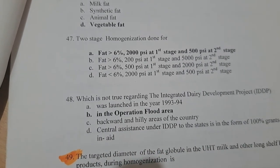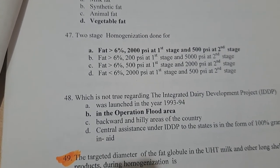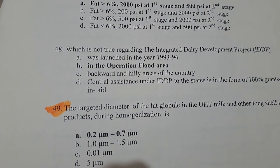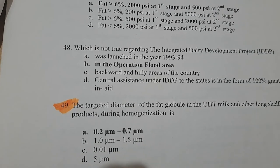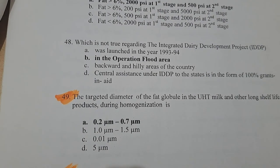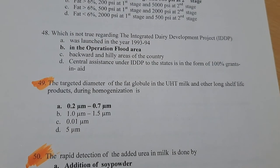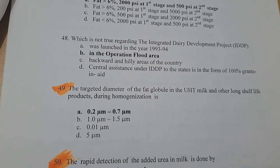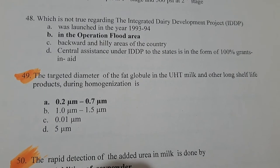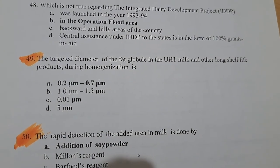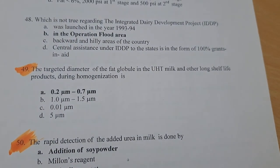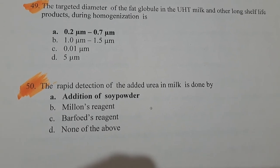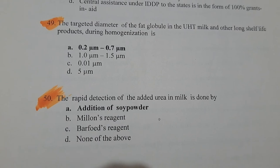In the field of milk, the source of fat is vegetable fat. Two-stage homogenization is done when fat is greater than 6%: 2000 PSI at the first stage and 500 PSI at the second stage. The targeted diameter of fat globules in UHT milk and other long shelf-life products during homogenization is 0.2 to 0.7 micrometers. Rapid detection of added urea in milk is done by addition of soya powder.